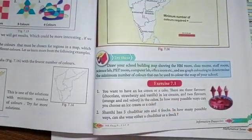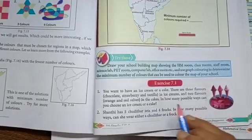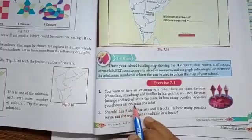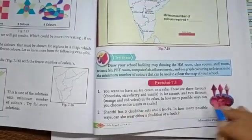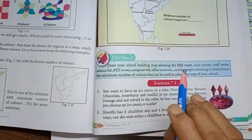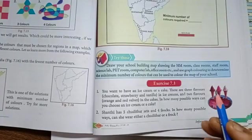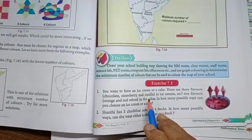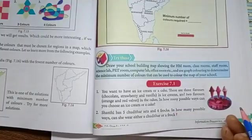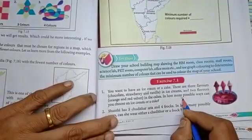Now, let's say 7.1. You want to have an ice cream or a cake, only one. There are 3 flavors, chocolate, strawberry and vanilla in ice creams and 2 flavors, orange and red velvet in the cakes. In how many possible ways can you choose an ice cream or a cake? So, we are going to have what? Either an ice cream or cake. Any one only. Ice cream can be selected from 3 flavors and cake from 2 flavors. Both the events cannot occur simultaneously. Selecting ice cream and cake. So, the number of possible ways equal, here 3, here 2. So, 3 plus 2.